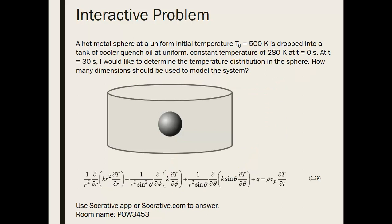Here is another interactive problem. A hot metal sphere at a uniform initial temperature of 500 K is dropped into a tank of cooler quench oil at a uniform constant temperature of 280 K. At time t = 30 seconds, we want to determine the temperature distribution in the sphere. How many dimensions should you use to model this system?